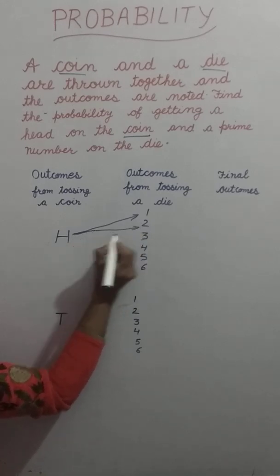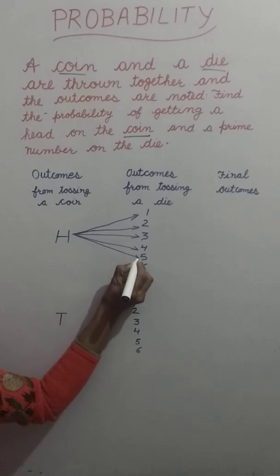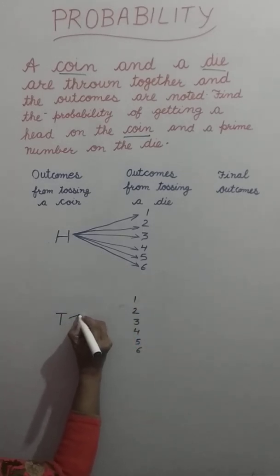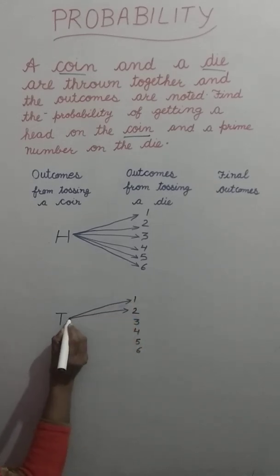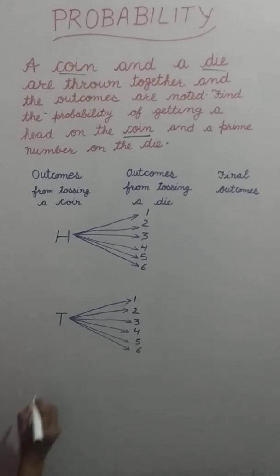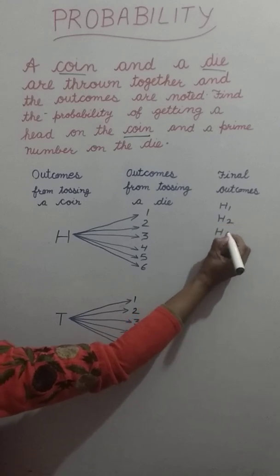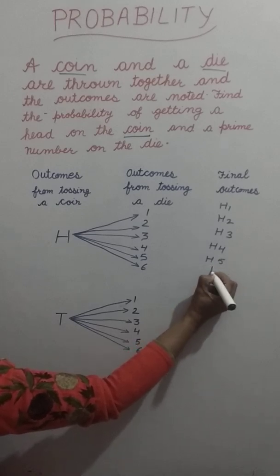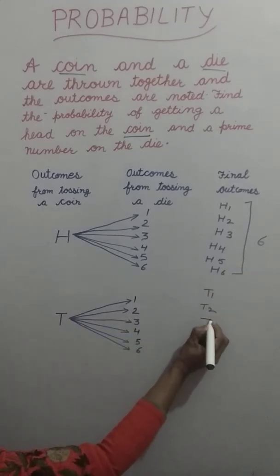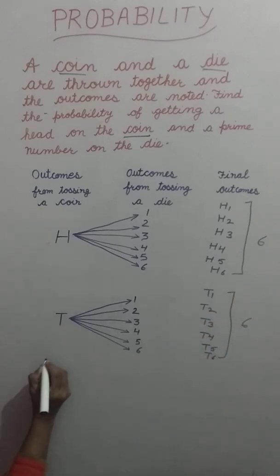So we can get: head with one, head with two, head with three, head with four, head with five, head with six — that's six outcomes. Or we can get tail with one, tail with two, tail with three, tail with four, tail with five, tail with six — another six outcomes. So my total outcomes are six plus six, which is twelve.